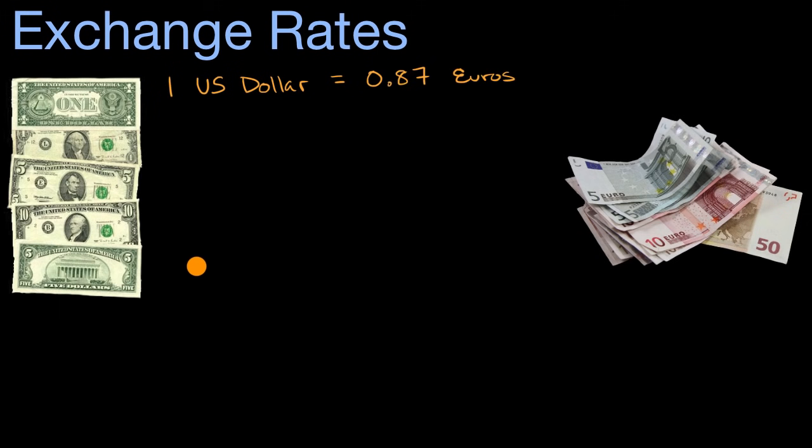Another way to express this is one euro is equal to how many US dollars? If you know this first equation, you can figure out the second one. You would essentially just divide both sides by 0.87. If you divide one by 0.87, you're going to get approximately 1.15. So at the time of this video, 1.15 US dollars is equal to one euro.